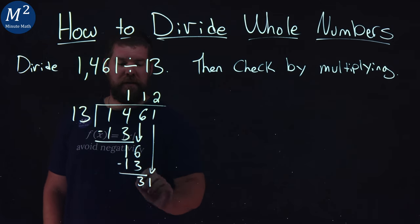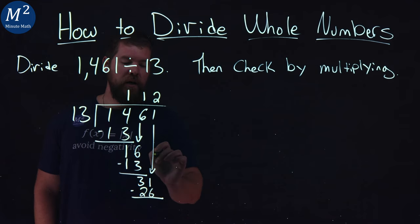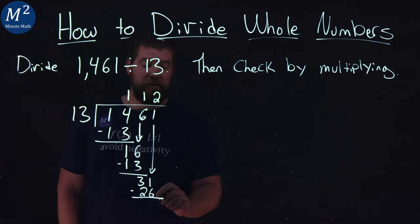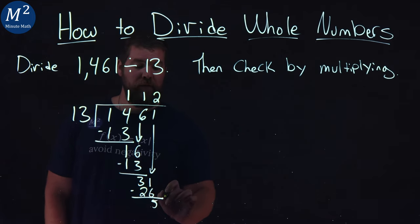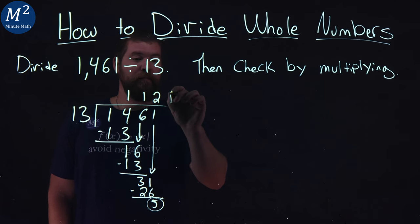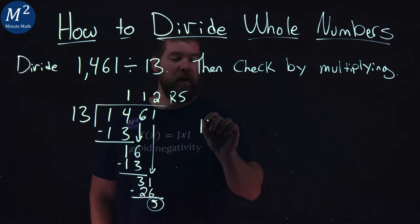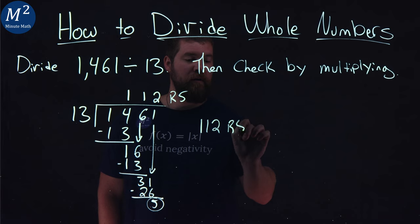2 times 13 is 26. We subtract the two numbers. 31 minus 26 comes out to be 5. That's our remainder here. So we got 112 with a remainder of 5.